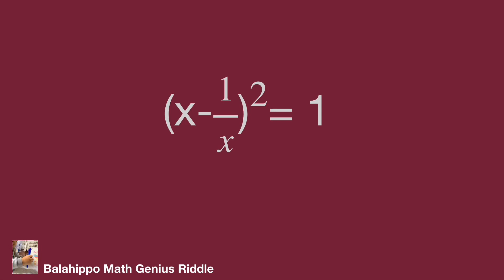Square root both sides of the equation as x minus 1 over x equals plus or minus 1. When x minus 1 over x equals 1, multiply x to both sides of the equation.